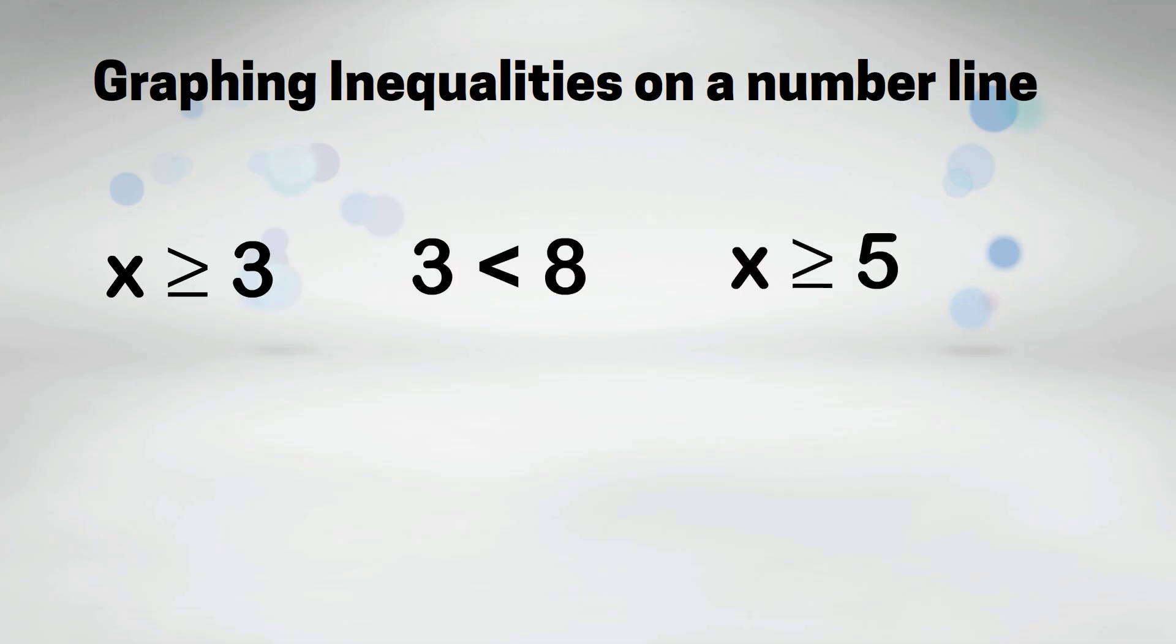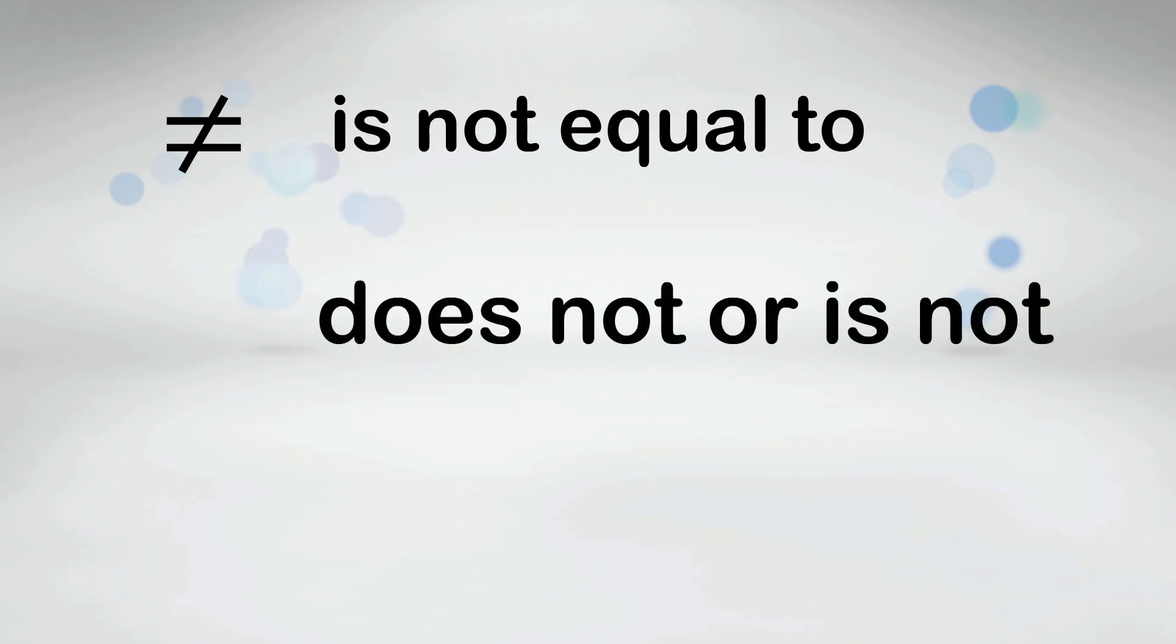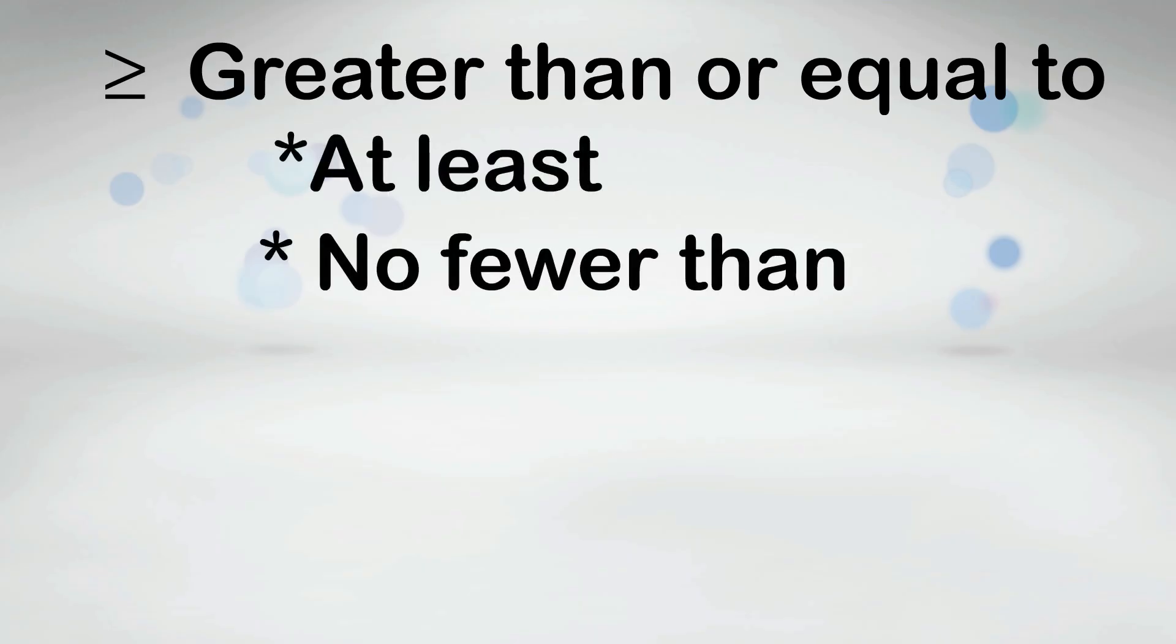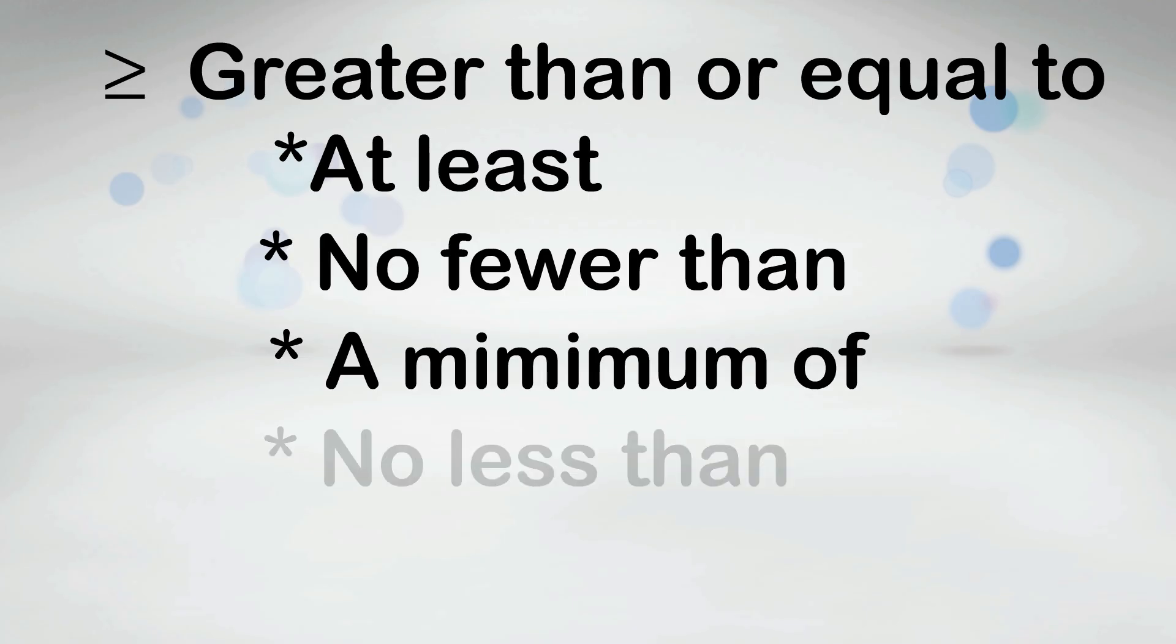The following symbols are used to express inequalities. The first symbol is not equal to, also expressed as does not or is not. The second symbol is greater than or equal to, also expressed as at least, no fewer than, a minimum of, or no less than.